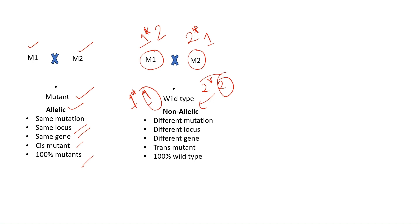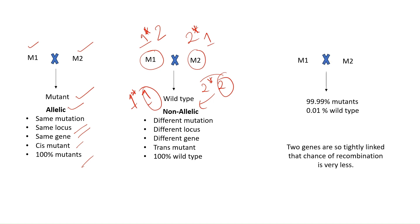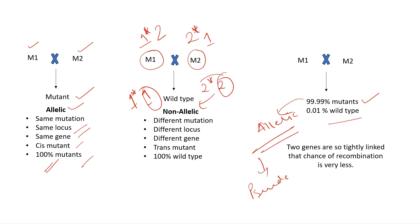But if it is a pseudo-allele, in that case we get 99.99% mutants and only 0.01% wild type. That means it is more like allelic — in allelic we get 100% mutants. But actually these are not true alleles; these are pseudo-alleles, because they are actually different genes on the same locus. Because these genes are very tightly packed, the chance of recombination between such genes is very low, which explains the rare wild-type recombinants.